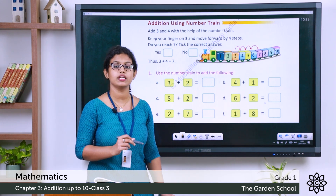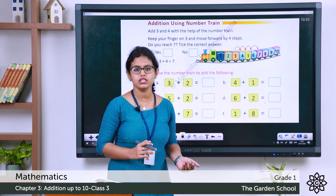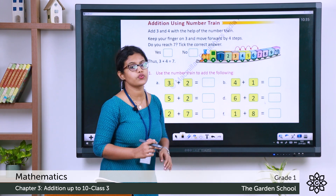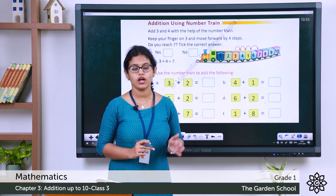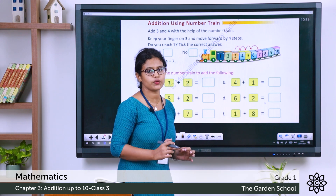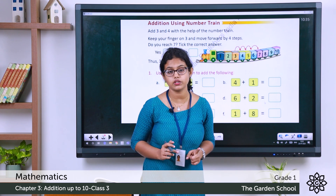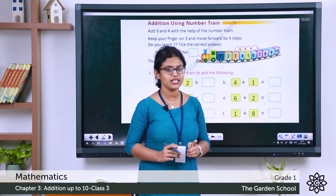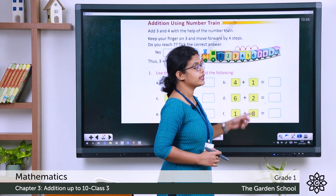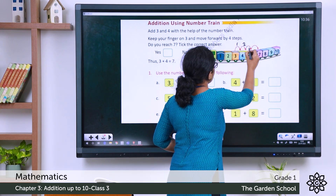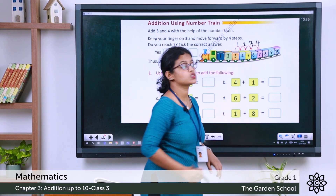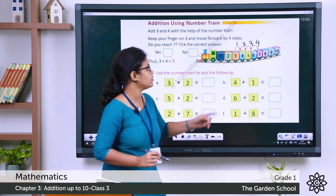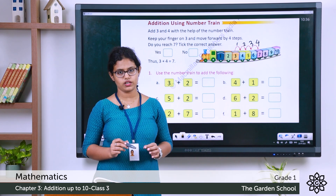Now let's see adding numbers using a number strip. For 3 plus 4: keep your finger on number 3, then move 4 steps forward — 3 to 4 (1), 4 to 5 (2), 5 to 6 (3), 6 to 7 (4). We have reached number 7. From 3, we moved 4 times and reached 7. So 3 plus 4 is 7.